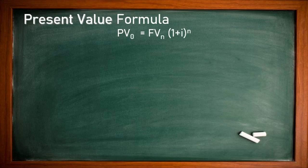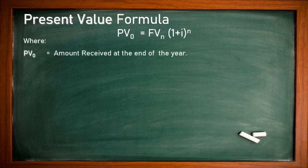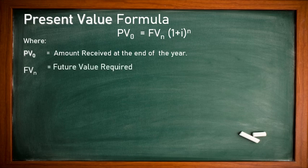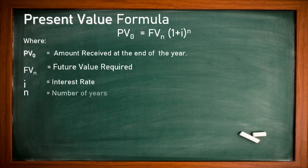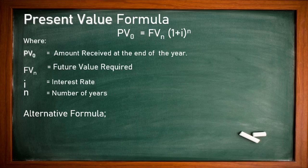The final general formula is: PV0 equals FVn divided by (1 + i) to the power n. Here PV represents the amount received at the end of the year — after 1, 2, 5, or 10 years. FV is the future value required — how much money you need after a certain period. i is the interest rate and n is the number of years. There is also an alternative formula using the present value investment factor, PVIF(i, n), from a table at the end of the book.